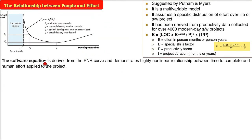Now the software equation which we already had discovered and learned is derived from the P and R curve and demonstrates a highly non-linear relationship between the time to complete and the human effort applied to the project. This is a non-linear curve. It has various independent variables involved.